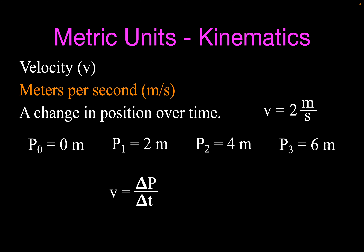This is the equation we use to calculate velocity. It says your change in position — delta, the Greek letter meaning 'change in' — over your change in time. We can expand that and say velocity is position final minus position initial over the change in time. That's how we calculate velocity in meters per second.